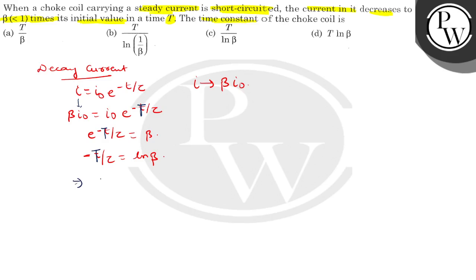So now to find tau: reverse the equation. Minus tau upon T equals 1 upon ln beta, and tau equals T upon ln beta. With the minus sign, moving it inside the ln, tau equals T upon ln of 1 by beta. So tau, our time constant, equals T upon ln of 1 by beta. The correct answer is option B. All the best.